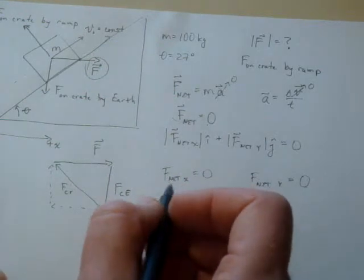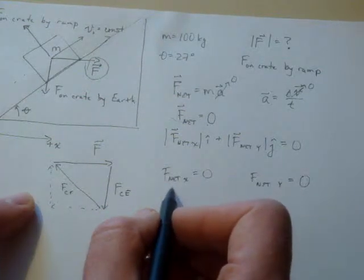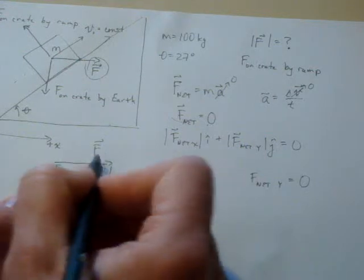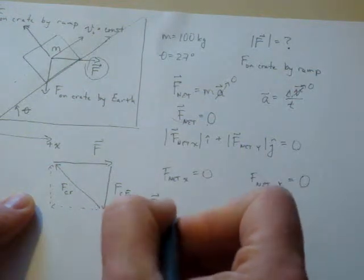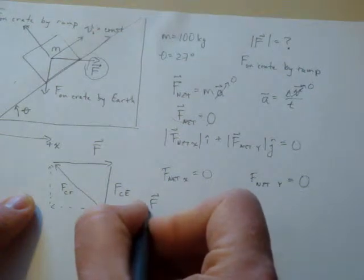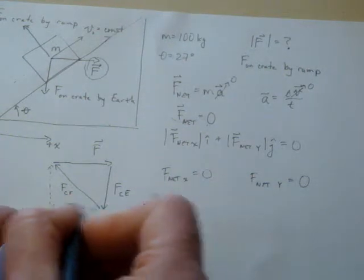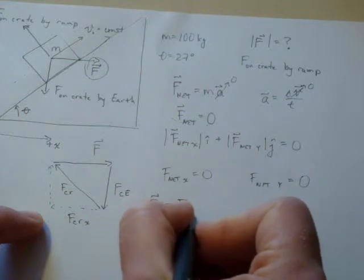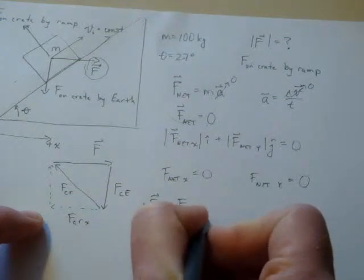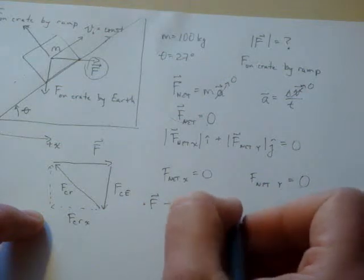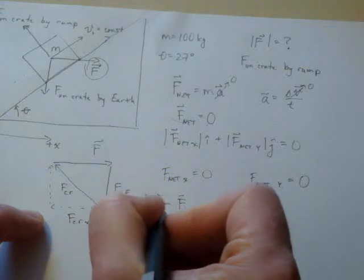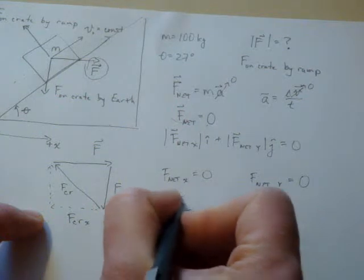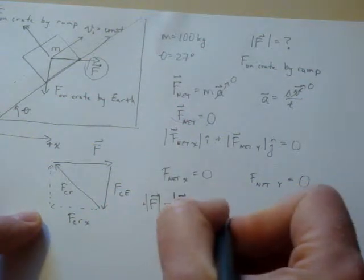When we write these things down we want to account for each force. The net force in the x direction includes capital F moving to the right, so it gets a positive sign. Then we add the x component of the force of the crate on the ramp — that's minus the force on the crate by the ramp in the x direction, where the negative sign means we're considering the magnitudes of those vectors. That's going to be equal to zero.